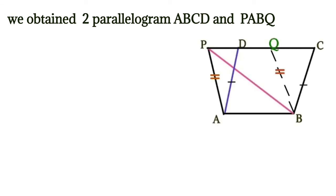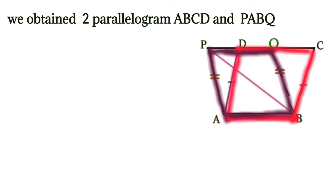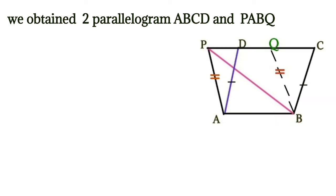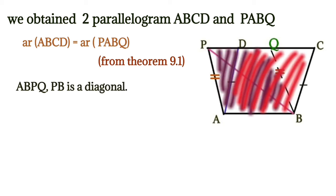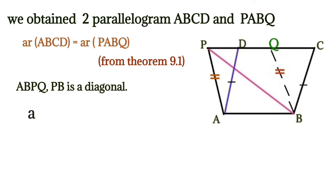We can say these two parallelograms are on the same base and between the same parallel lines. After seeing these two parallelograms, recall theorem 9.1 — we already learned that two parallelograms on the same base and between the same parallels have equal areas. So we can write: area of parallelogram ABCD is equal to area of parallelogram ABPQ.